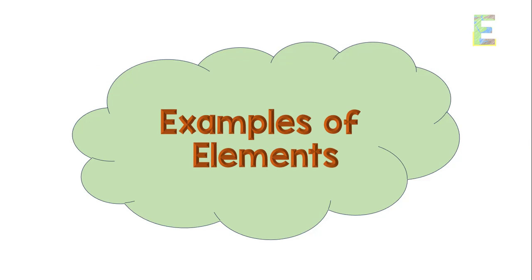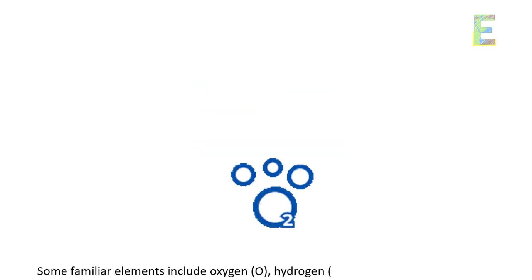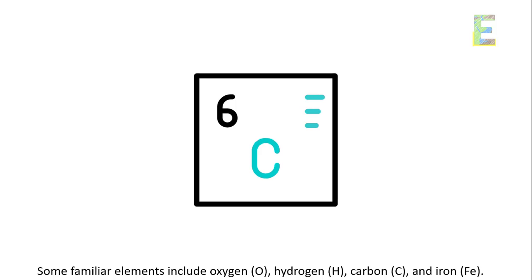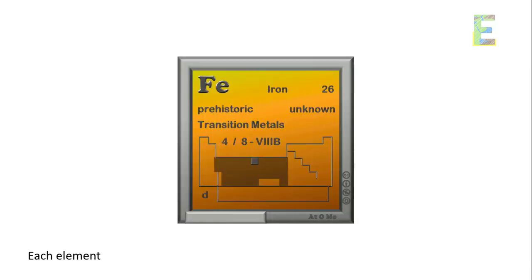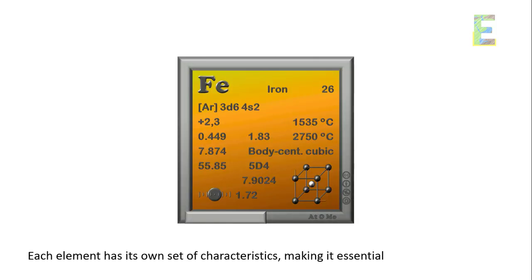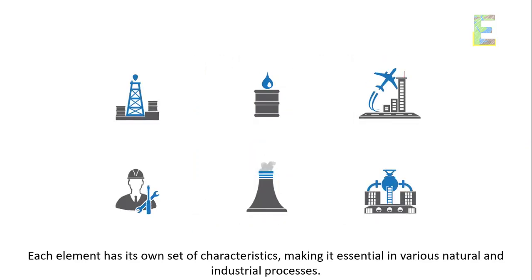Examples of elements: some familiar elements include oxygen O, hydrogen H, carbon C, and iron Fe. Each element has its own set of characteristics, making it essential in various natural and industrial processes.